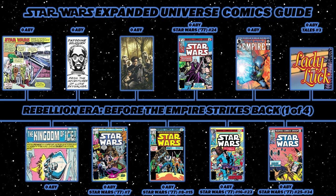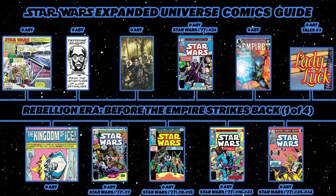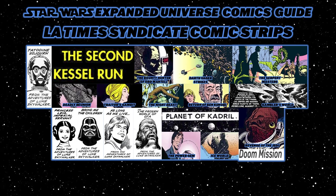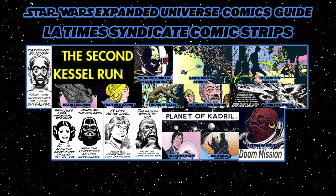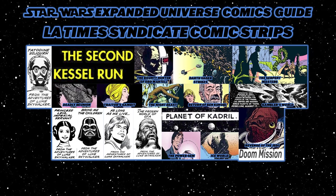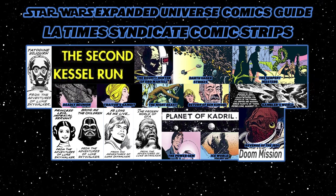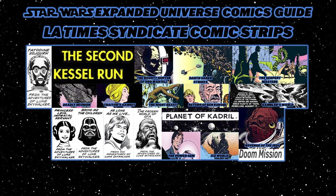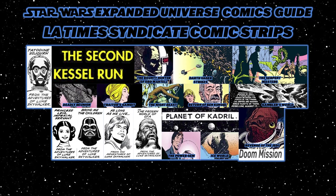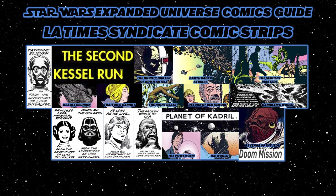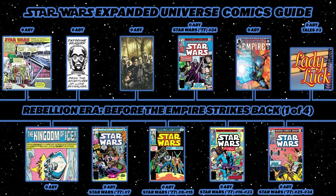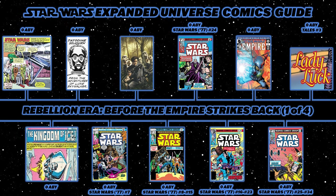The Los Angeles Times Syndicate ran many Star Wars comic strips across the 70s and 80s, beginning with Tatooine Sojourn, then The Second Kessel Run, The Bounty Hunter of Ord Mantell, Darth Vader Strikes, The Serpent Masters, Deadly Reunion, Trader's Gambit, The Night Beast, The Return of Ben Kenobi, Gambler's World, Princess Leia Imperial Servant, Bring Me the Children, As Long As We Live, The Frozen World of Ota, Planet of Kadril, The Power Gem, Ice World, Revenge of the Jedi, Doom Mission, Race for Survival, The Paradise Detour, A New Beginning, Showdown, and The Final Trap.